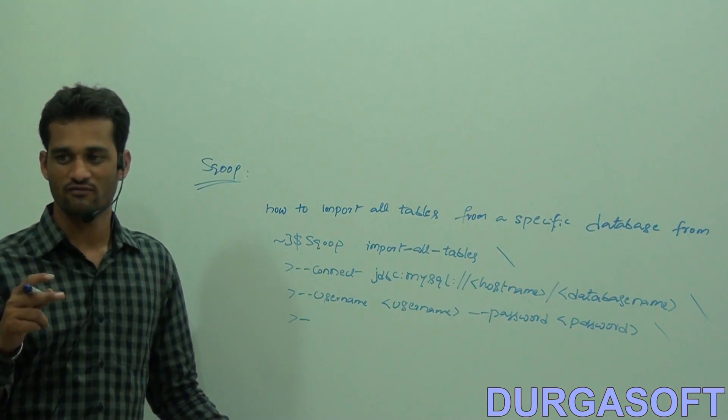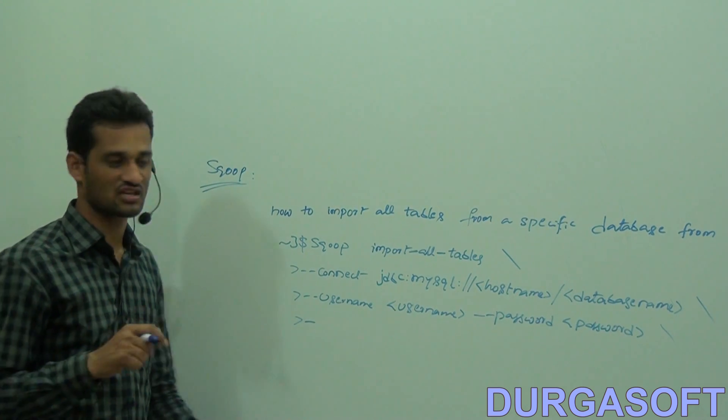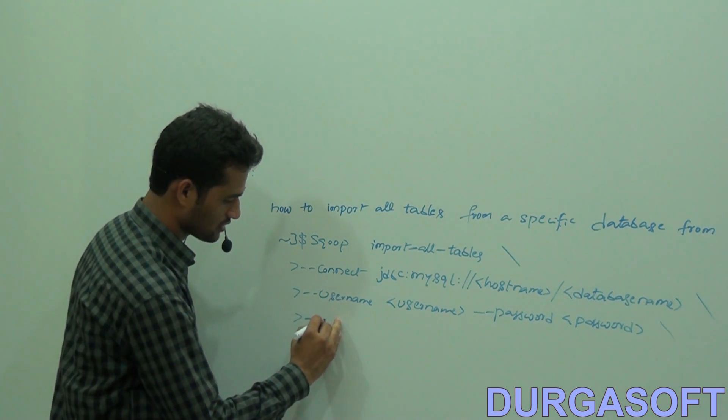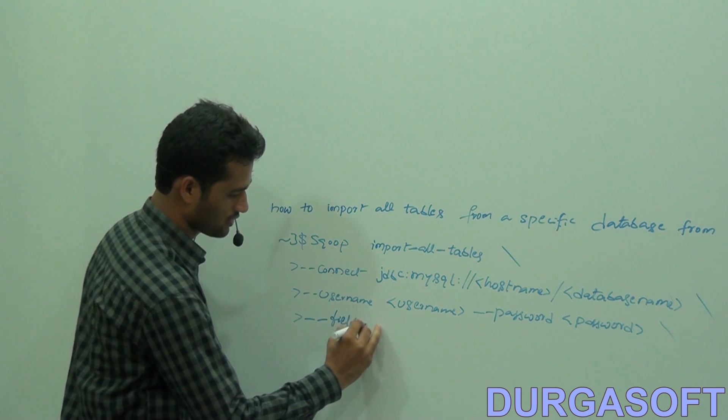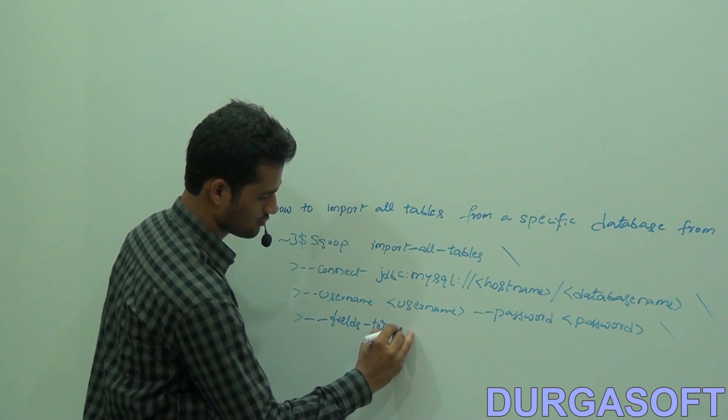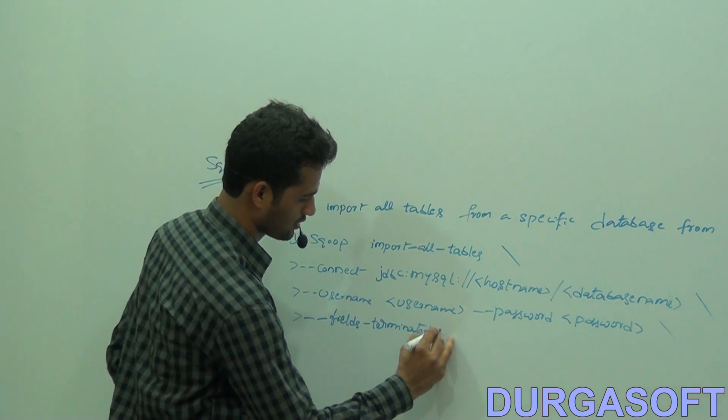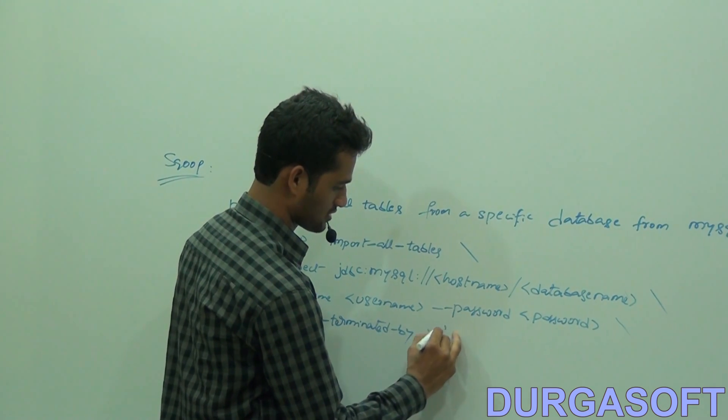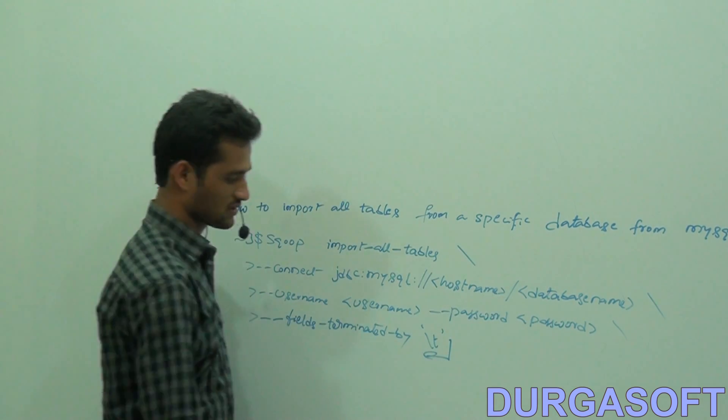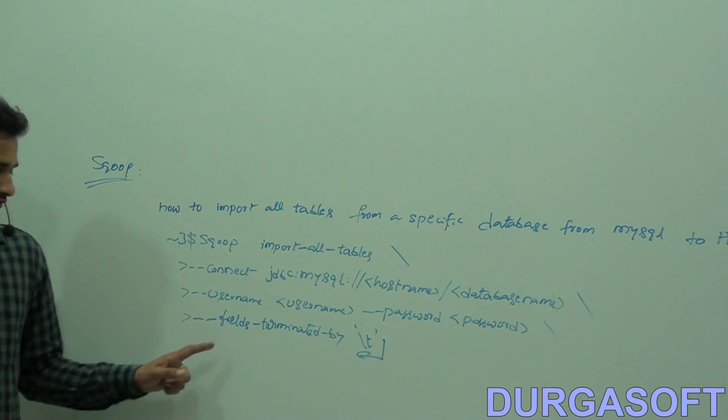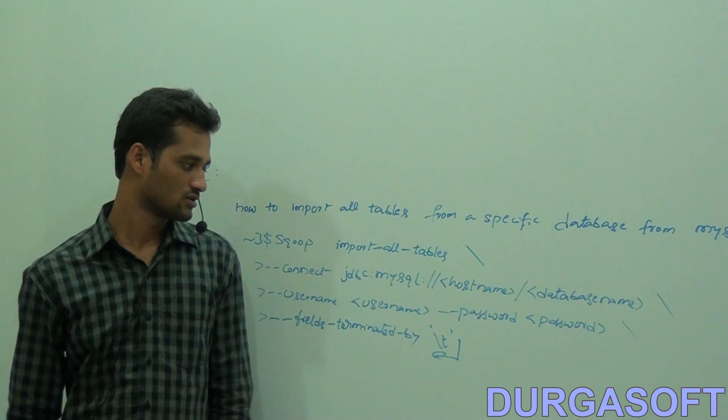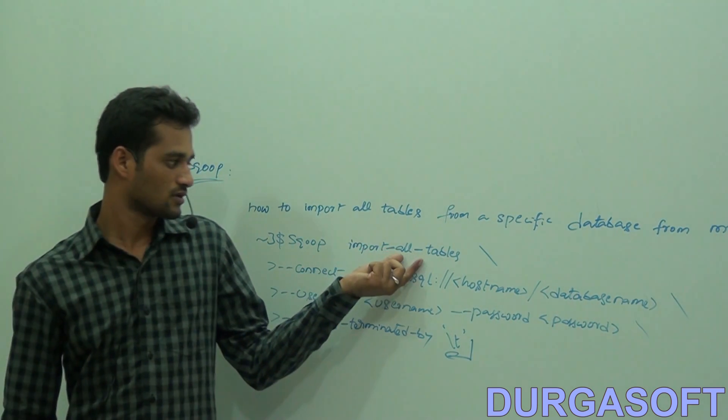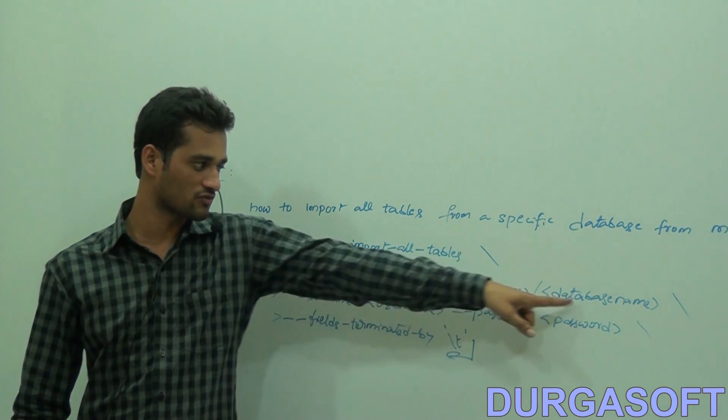Each and every field should be terminated with backslash t. For that reason, I will give '--fields-terminated-by \t'. So this command will pull out all your tables from your specific database.